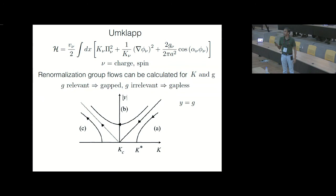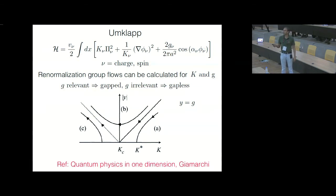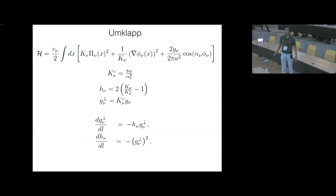You can write down RG flow equations for the Luttinger parameter, and what happens is that depending on your bare Luttinger parameter, as you run the RG flow you could flow to a Luttinger liquid — everything to the right of the separatrix, with G becoming irrelevant — or when G is relevant you open a gap. Whether you open a gap or flow to a Luttinger liquid depends on which side of the separatrix line you started from.